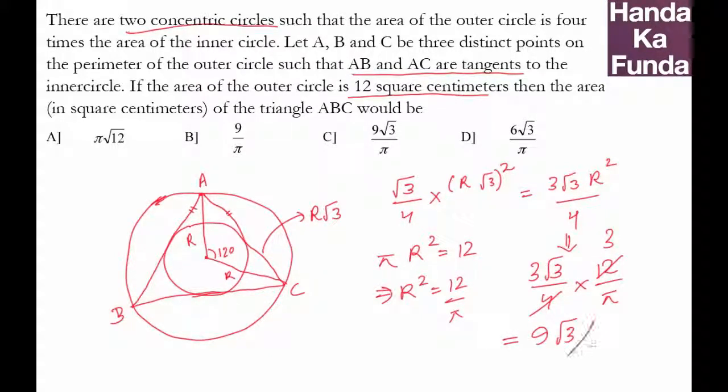I get 9 root 3 by pi as the area of triangle ABC. Is that there in the options? Yes, it is there, which makes option C as my answer. Thank you.